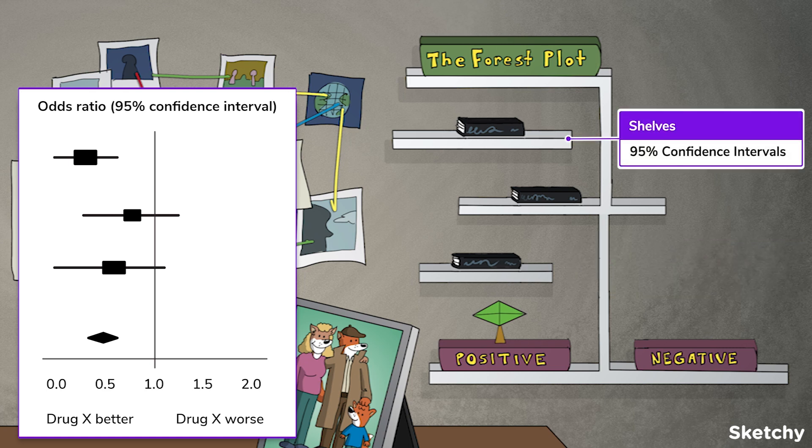And the horizontally placed shelves upon which these books rest are the 95% confidence intervals, which gives you an idea of the precision of the effect measures. The narrower the interval, the more precise the measure is. Remember, by saying 95% interval, we're saying that if we repeated this study 100 times, then we can be 95% sure that the effect measure for 95 of these will lie somewhere within this interval.